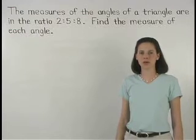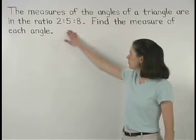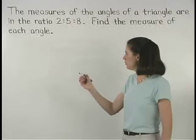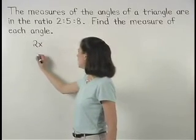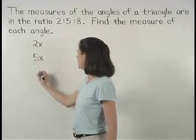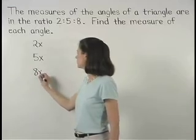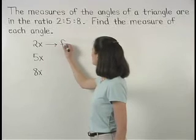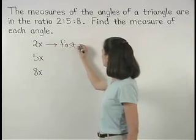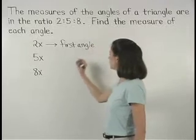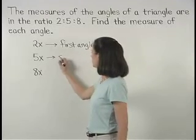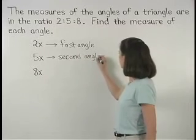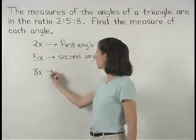Remember that when the ratio of the angles is 2 to 5 to 8, we can represent the angles as 2x, 5x, and 8x. So let's call 2x our first angle, 5x our second angle, and 8x our third angle.